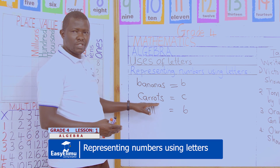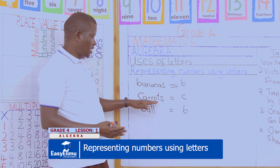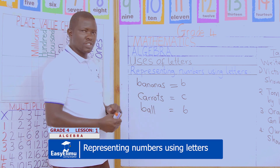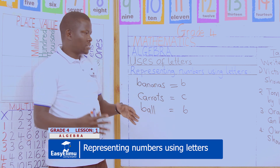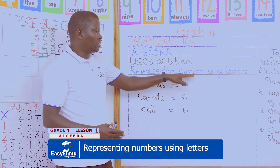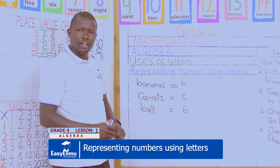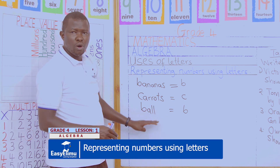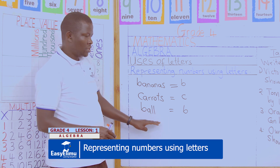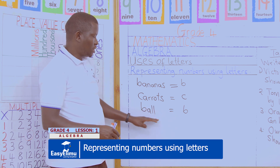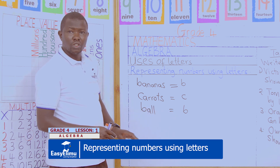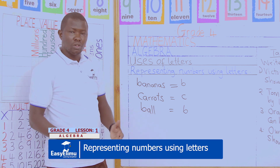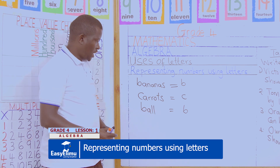How many carrots? We say Victoria has C carrots — C is standing for an unidentified number. Jane has B balls — B is standing for the number of balls that Jane had.